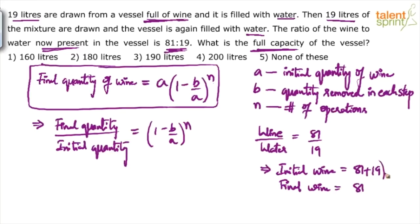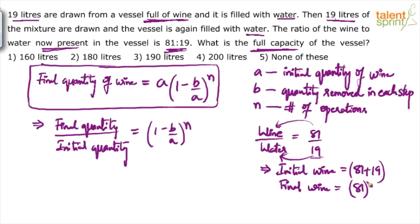We are not talking about quantity in liters — only number of parts. Initially there were 81 plus 19 equals 100 parts of wine. From these 100 parts, 19 parts have been replaced with water in two operations. It is just a coincidence that this 19 in the ratio and the 19 liters removed are the same — it may not always be. I am only looking at the final ratio: 81 parts wine and 19 parts water. Initially those 19 parts of water were wine; in two operations we replaced that 19 parts of wine with water. So initial wine was 100 parts, final wine is 81 parts.